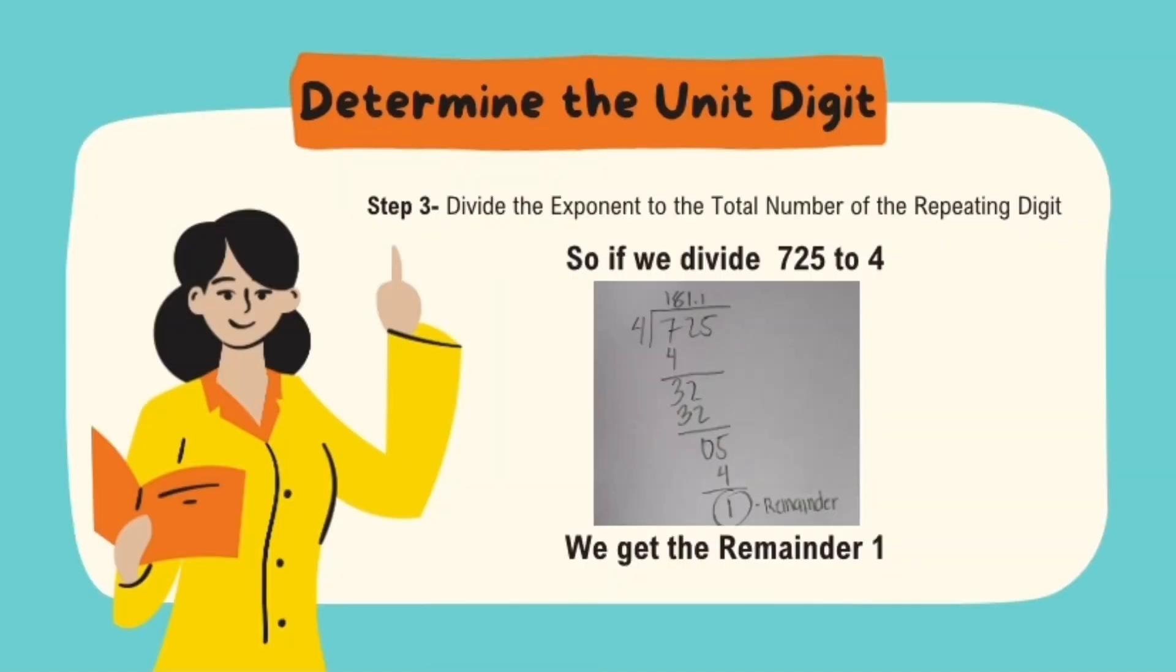Step 3, divide the exponent by the total number of the repeating digits. If we divide 725 by 4, we get the remainder of 1. We divide by 4 because we divide it by the total number of repeating digits, which is 4.